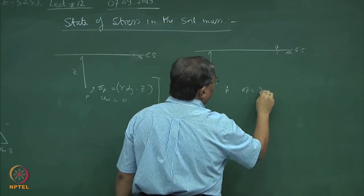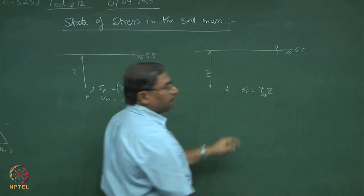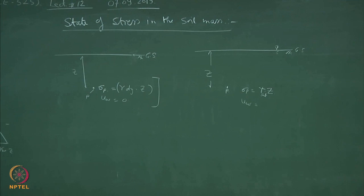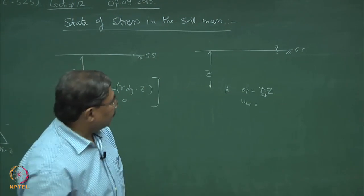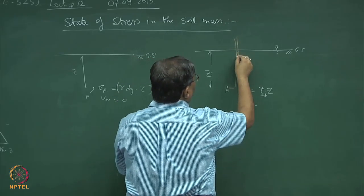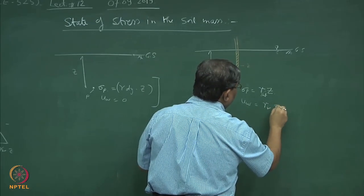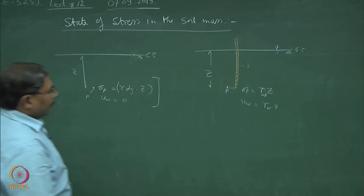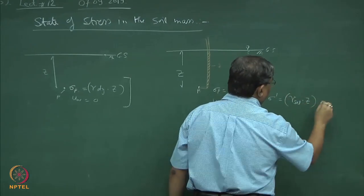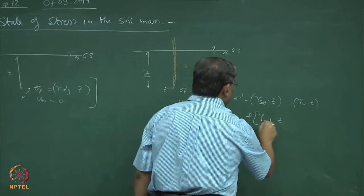Sigma_P here would be γ_sat times z. This gamma is saturated now because the water table is here. The pore pressure at this point — if you put a piezometer and let it show a rise of height z — the pore pressure at this point would be γ_w times z. What is the effective pressure? This will be γ_sat·z minus γ_w·z, which becomes γ_submerged times z.